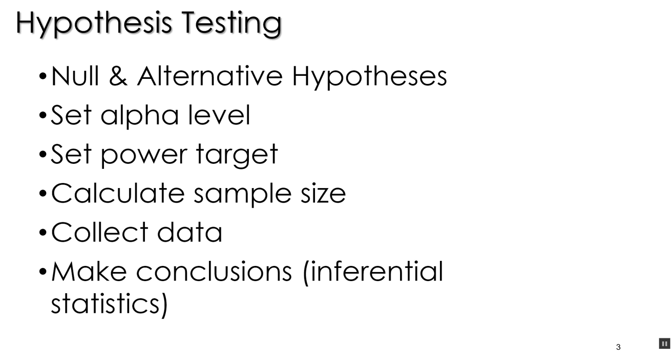In general, the way that we do hypothesis testing is that we should set a null and alternative hypothesis. Then we set the alpha level. And of course, in psychology, that is 0.05. Ronald Fisher came up with that about 100 years ago, and we and a lot of other fields are sticking to it. Then we set our power target. That is for statistical power. And Cohen suggests that we set it at least 0.8.